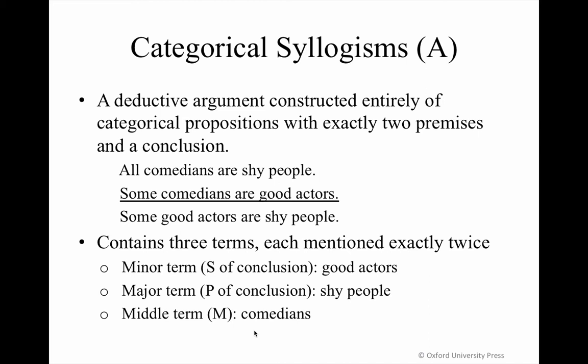The subject of the conclusion is known as the minor term, and it will always be specified with a capital S. The predicate of the conclusion is called the major term, designated by a capital P. The term that is repeated in the premises is called the middle term, denoted by a capital M.